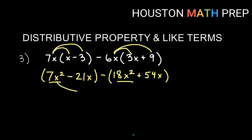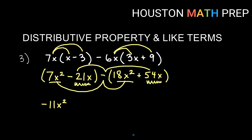Be careful with your signs — the two x² terms are like terms. We have 7x² minus 18x², so 7 minus 18 gives negative 11x². For the x terms, I have negative 21x and I'm subtracting 54x, so negative 21 minus 54 gives negative 75x. That's our simplified result: negative 11x² minus 75x.